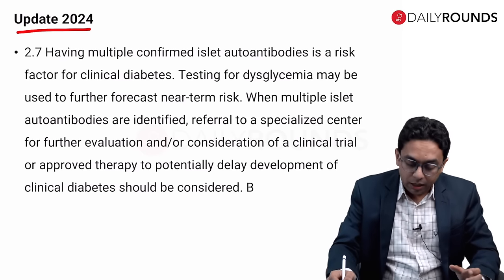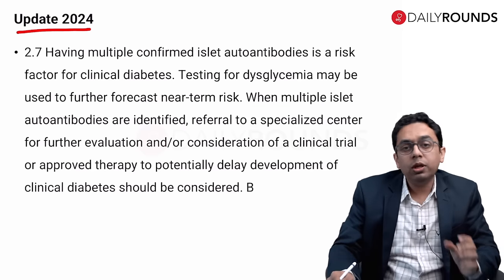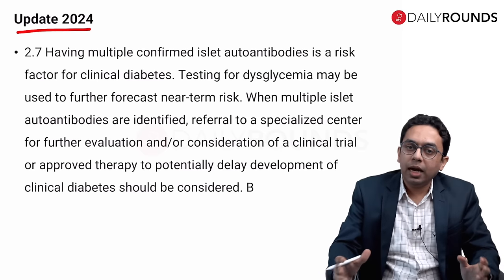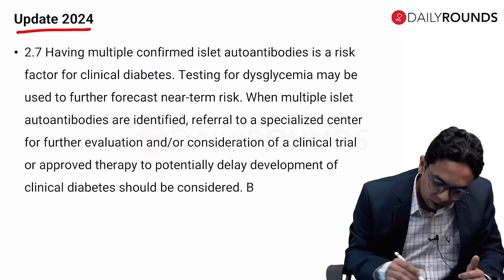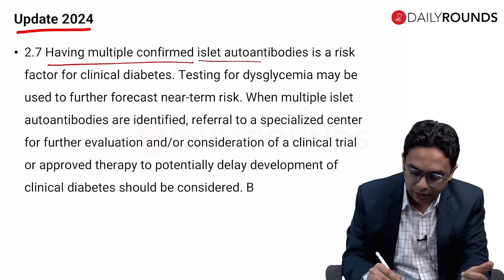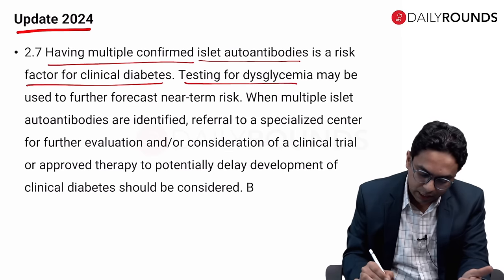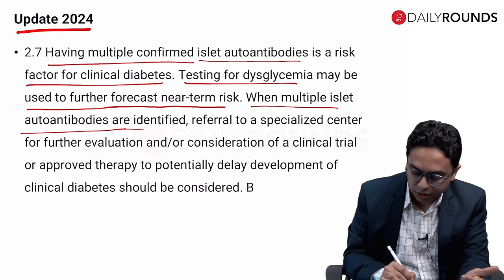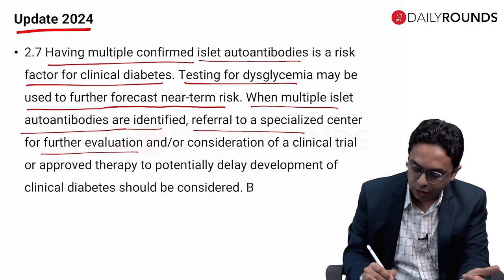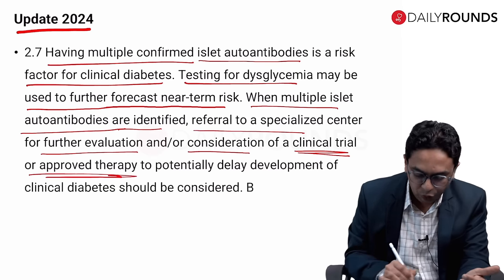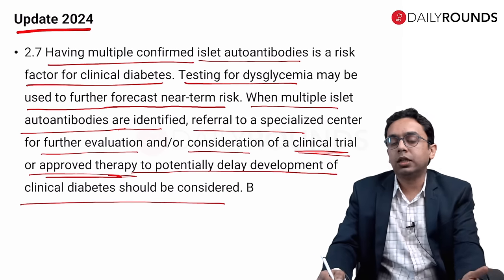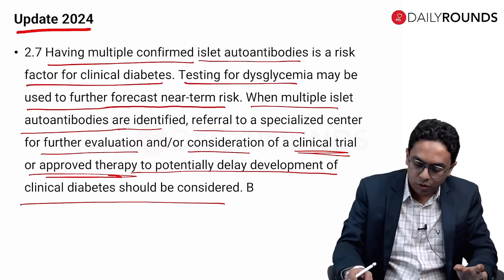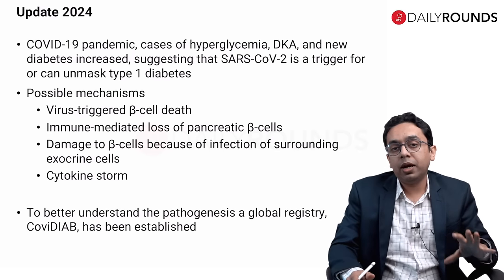In 2024, guidelines were also updated regarding delay of type 1 diabetes. Having multiple confirmed islet autoantibodies is a risk factor for clinical diabetes. Testing for dysglycemia may be used to forecast near-term risk. When multiple islet autoantibodies are identified, referral to a specialized center for evaluation and consideration of a clinical trial or approved therapy — such as teplizumab — to potentially delay the development of clinical diabetes should be considered.